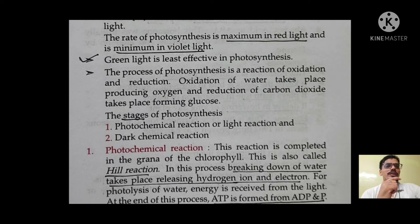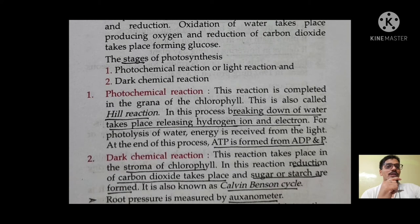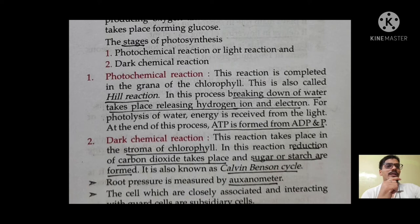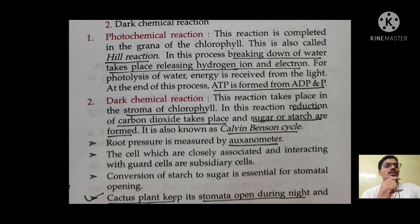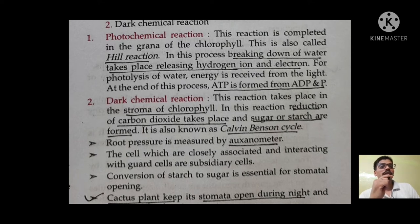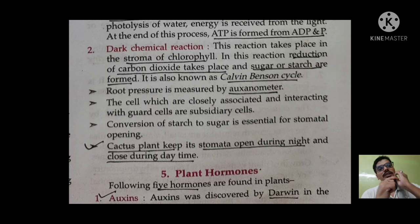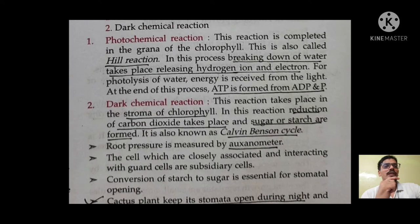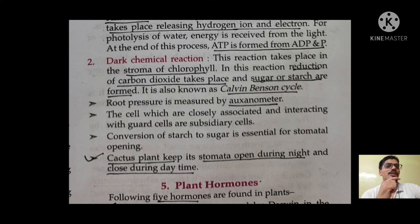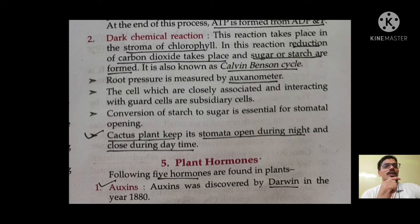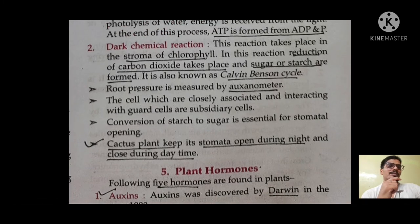There are two stages of photosynthesis. First is the photochemical reaction or light reaction. Second is the dark chemical reaction. In the light reaction, it is completed in the grana of chloroplast and is also called the Hill reaction. In this, breakdown of water takes place releasing hydrogen ions and electrons, and at the end ATP is formed from ADP and phosphate. The dark chemical reaction takes place in the stroma of chloroplast and is also known as the Calvin-Benson cycle.